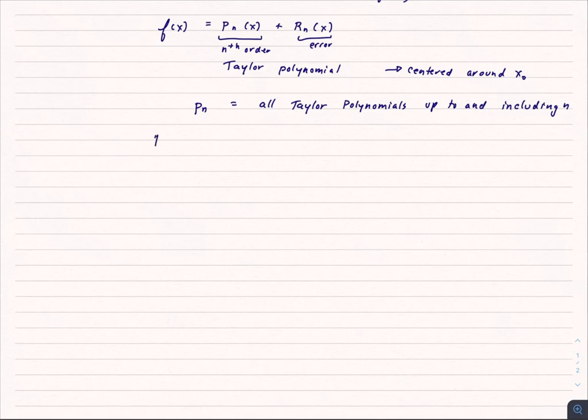So what does that look like? p sub n is equal to f evaluated at x0 plus the first derivative of f evaluated at x0 times (x minus x0) plus now the second derivative evaluated at x0 and that's going to be divided by 2 factorial. We're then going to multiply that by (x minus x0) squared plus the third derivative evaluated at x0 divided by 3 factorial and hopefully you can see where that would go.